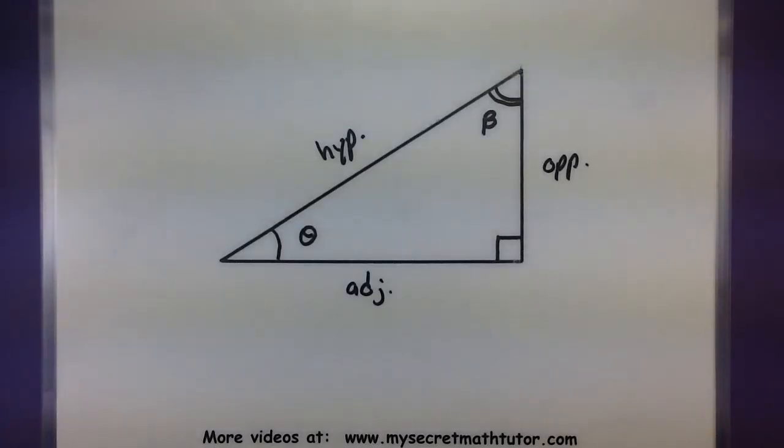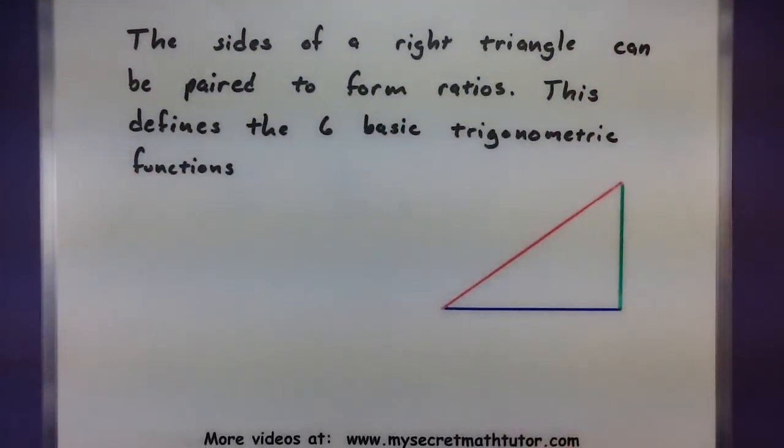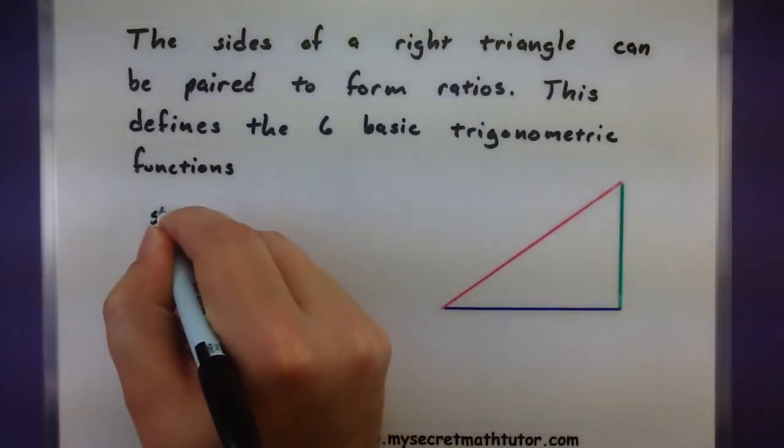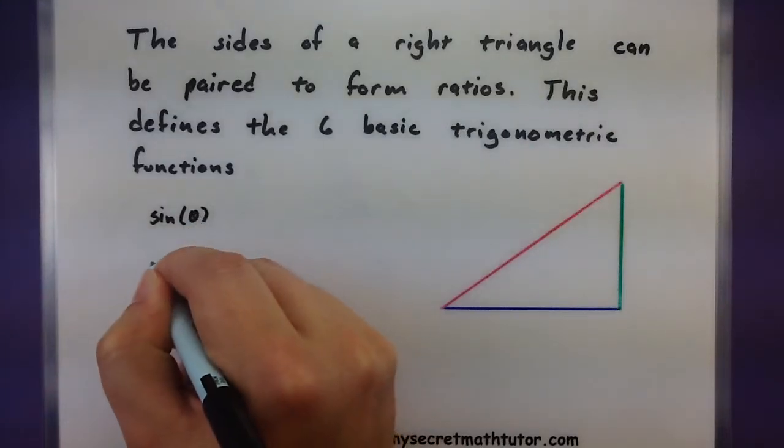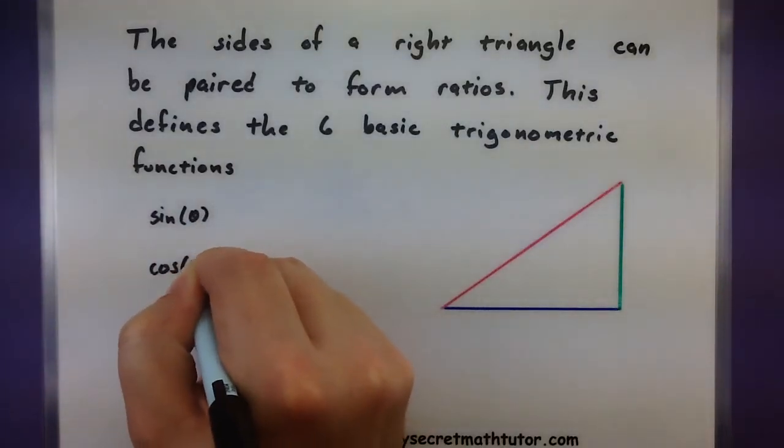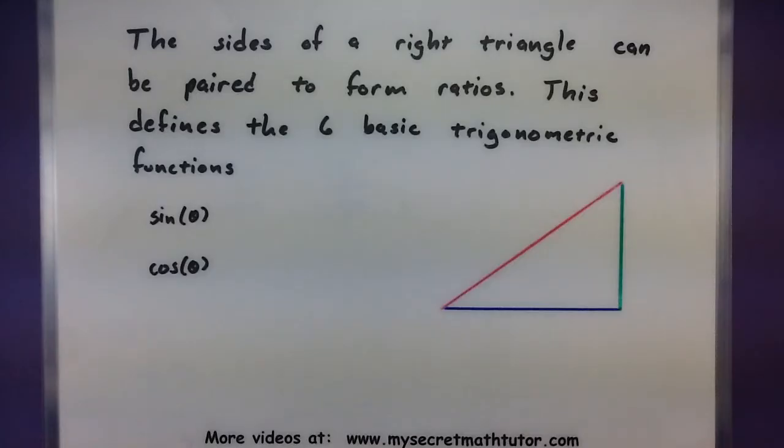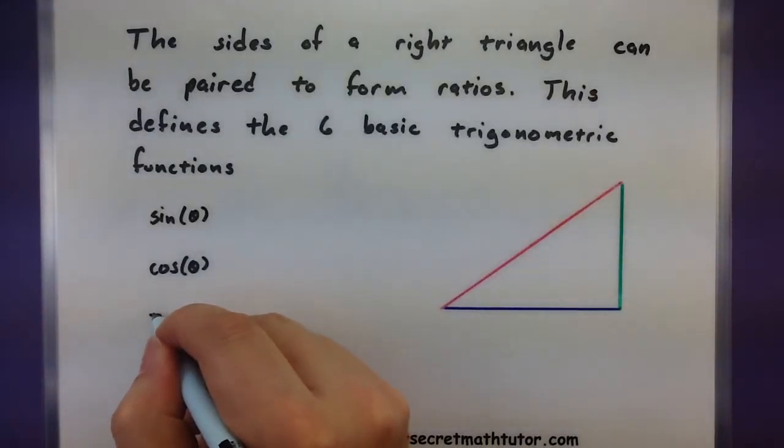Now, once you have that out of the way, then you're in a perfect spot to actually talk about the trigonometric functions. These are things like sine, cosine, tangent, and at first it may be a little confusing, like, what are these things exactly talking about? And it's all about pairing up the sides that you've identified and creating ratios out of them.